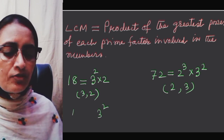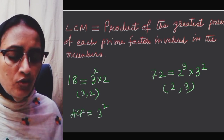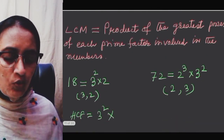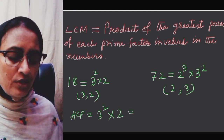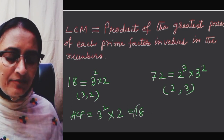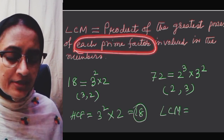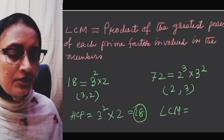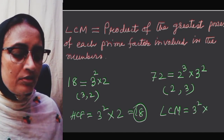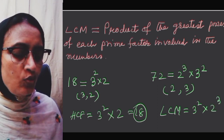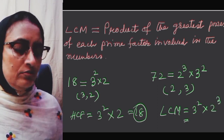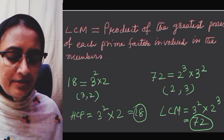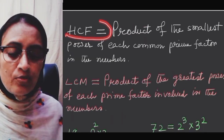For HCF, we take the product of the smallest power of each common prime factor. The common prime factors are 2 and 3. Smallest power of 2 is 1 and smallest power of 3 is 2, but the smallest is 1. So HCF = 2 × 3 = 18. For LCM, we take the greatest power: 3² and 2³, so LCM = 8 × 9 = 72.